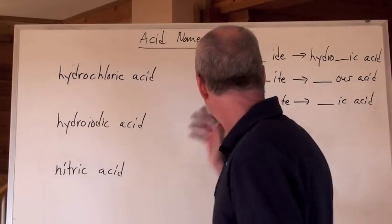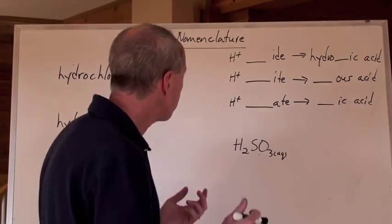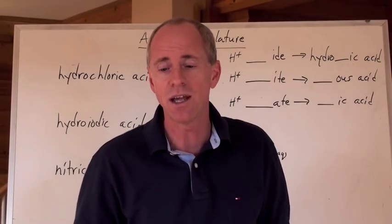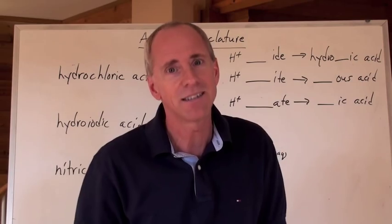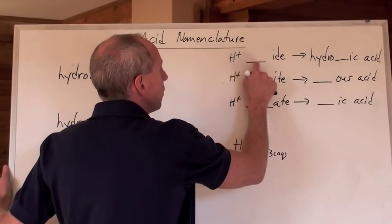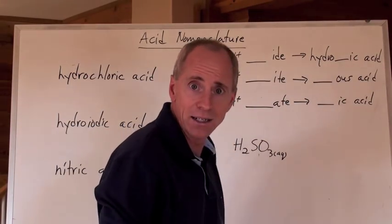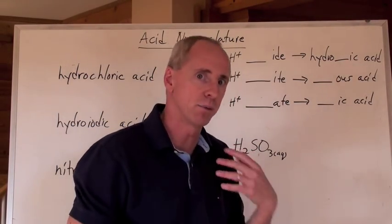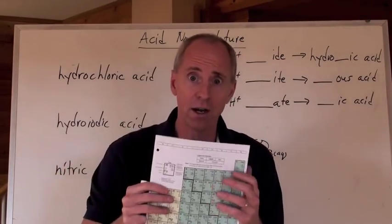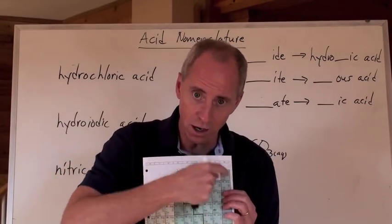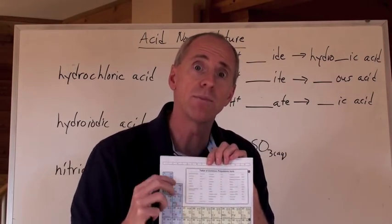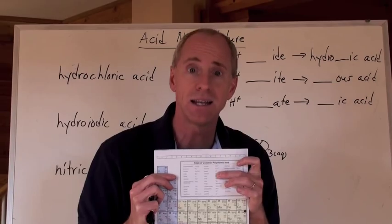Now how do you name acids? Here's a little chart. When you take an H-positive and put it together with something that ends in '-ide', like chloride and bromide — any of those '-ides', which are going to be found on the non-metal side — and there's one '-ide' over here you have to worry about in the polyatomic chart, and that's cyanide.